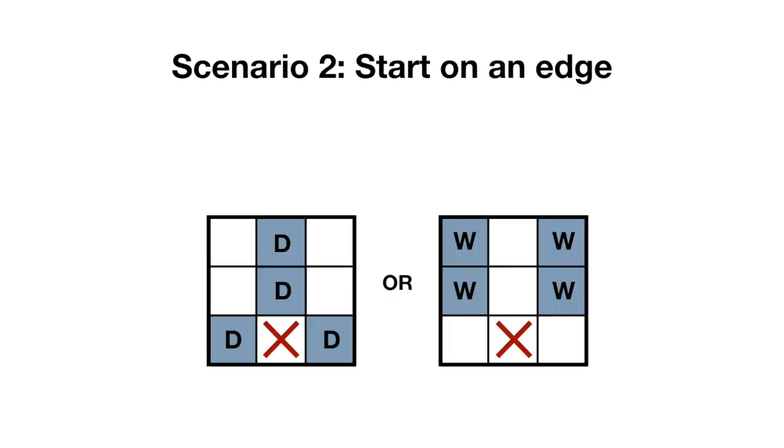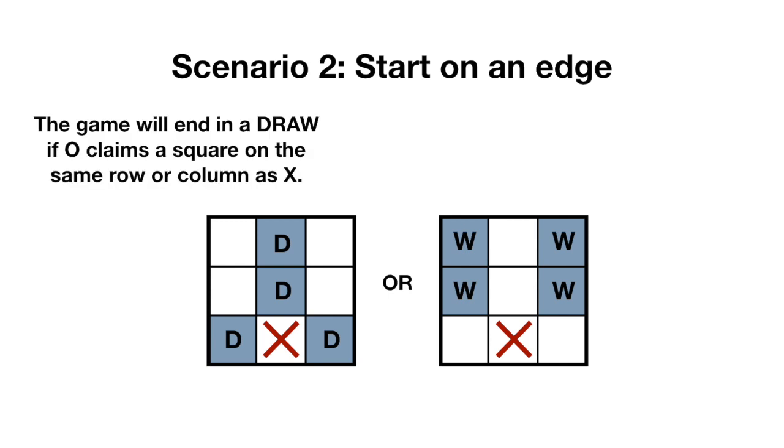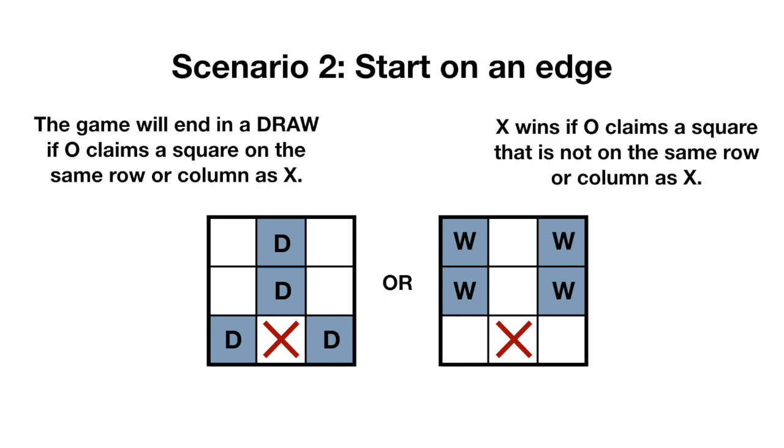The next scenario to consider is if x claims an edge on the first move. The game should end in a draw if O claims a square on the same row or column as x, but x should win if O chooses a square that's not on the same row or column as x. So once again, half of the possible first moves for O lead to a draw and half lead to a loss.